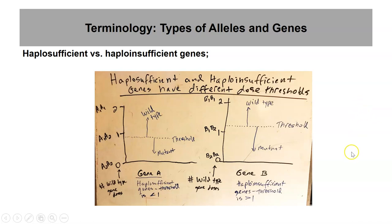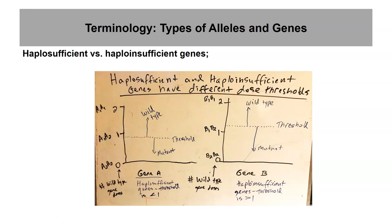Most genes are haplosufficient. Enzymes are a good example — genes encoding enzymes are haplosufficient because enzymes are catalytic proteins that can catalyze more than one reaction. If you cut the dose of those genes in half, it's not really going to affect the phenotype. Genes that produce regulatory proteins, though, are typically haploinsufficient. Regulatory proteins — for example, proteins that regulate gene expression or transcription — are usually produced in very low amounts, so if you cut their dose in half, they'll fall below the threshold for the wild-type phenotype.